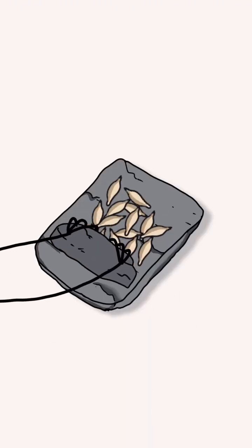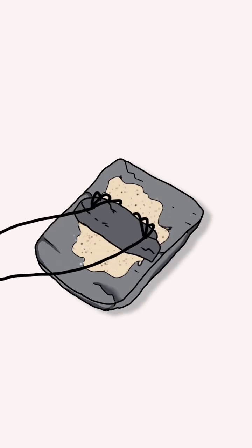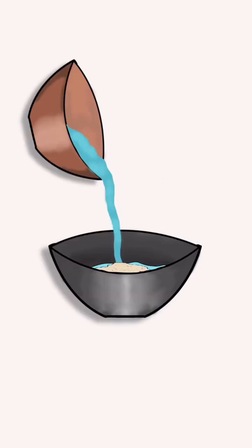First off, start by crushing your wheat grains with a rock until they're broken down. Mix them with warm water and let it sit. This turns some of the starch into sugar.